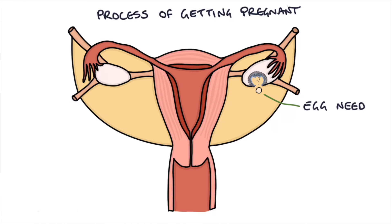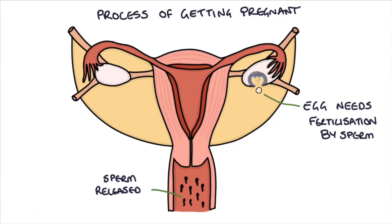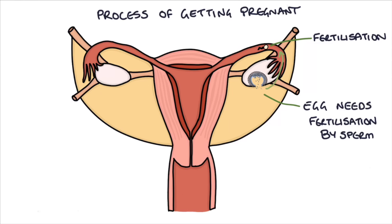This egg then needs to be fertilized by sperm. During sex, the sperm are released into the vagina, then travel through the cervix and uterus and into the fallopian tubes — it's in the fallopian tubes that the egg and sperm meet. Once fertilized, that cell moves back down the tubes into the uterus and implants into the endometrium, or the lining of the uterus.